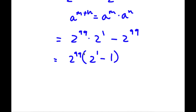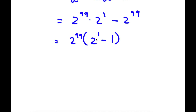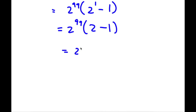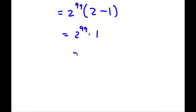So I have 2 to the power of 99 times 2 to the power of 1 minus 1. Now 2 to the power of 1 minus 1 — well 2 to the power of 1 is 2, so I have 2 to the power of 99 times 2 minus 1. And 2 minus 1 is simply 1, so I have 2 to the power of 99 times 1. Anything times 1 is itself, so now I have 2 to the power of 99.